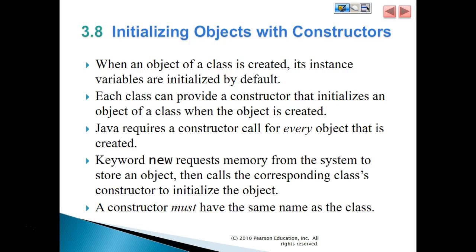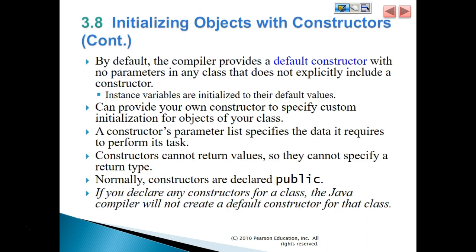Initializing objects with constructors: when an object of a class is created, its instance variables are initialized by default. Each class can provide a constructor that initializes an object of a class when the object is created. Java requires a constructor call for every object that is created. The keyword new requests memory from the system to store an object, then calls the corresponding class constructor to initialize the object. A constructor must have the same name as the class. The compiler provides a default constructor with no parameters in any class that does not explicitly include a constructor, and instance variables are initialized to their default values.